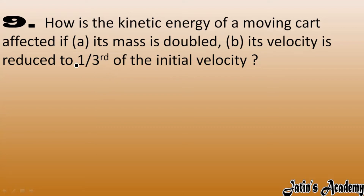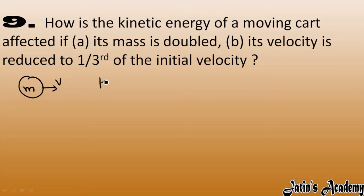For example, initially we have a body of mass m moving with velocity v, so its initial kinetic energy is ½mv². Now we have to calculate the kinetic energy when the mass is doubled.